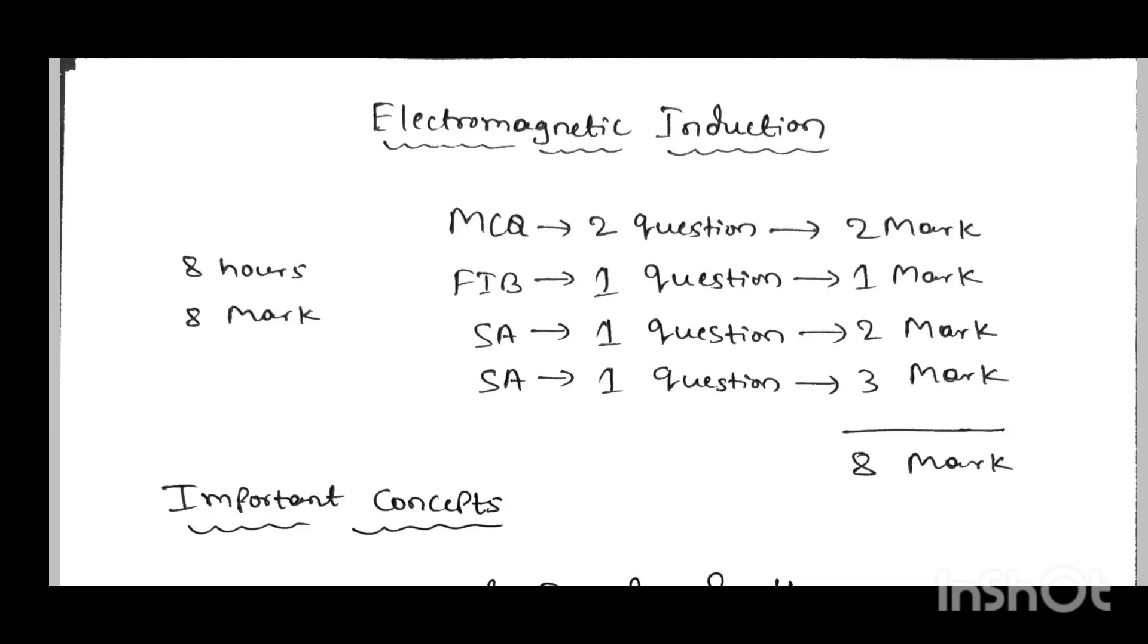Hi everyone, today I'm going to discuss important concepts on electromagnetic induction, alternating current, and electromagnetic waves. If you prepare these three chapters completely, you can easily get 19 marks in your 2nd PUC Annual Exam 2024. For those watching my videos for the first time, please like and subscribe for more updates and share the videos with your friends.